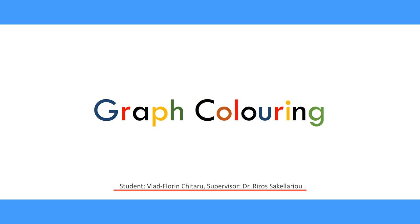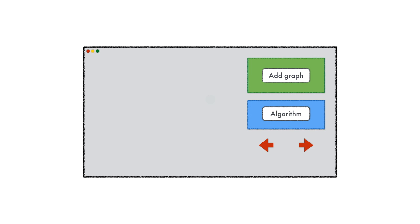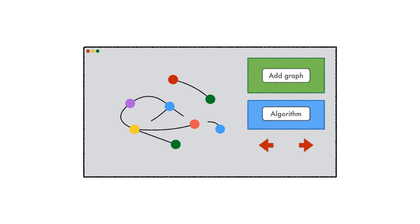The scope of this screencast is to offer you a brief overview of my third-year project. The aim of the project was to develop a learning tool capable of illustrating graph coloring. More precisely, the application allows both technical and non-technical students to visualize and understand different sequential graph coloring algorithms.